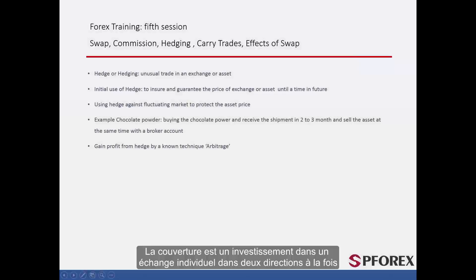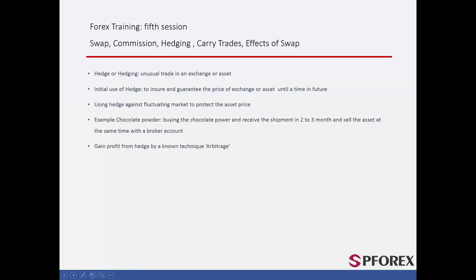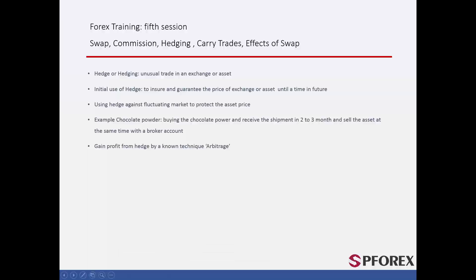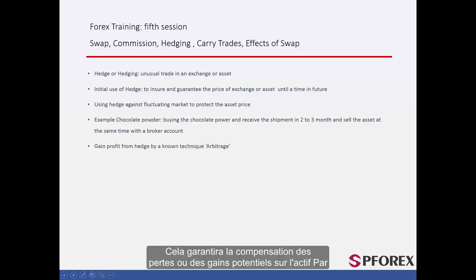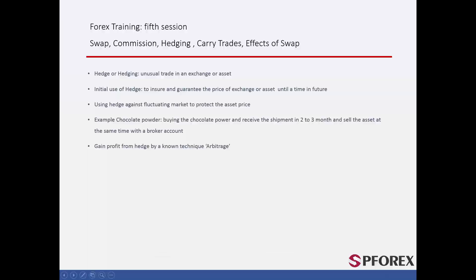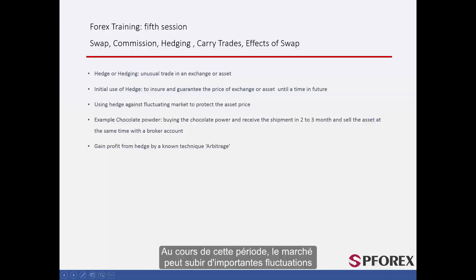Hedging is an investment in an individual exchange in two ways at once. In simple terms, it means to sell and buy a certain asset at the same time. The purpose of hedging is to guarantee the price of an asset until a specific time in the future, ensuring the offset of potential losses or gains. For instance, imagine a businessman purchasing chocolate powder from some country and it takes two or three months for the merchandise to be delivered. During this period, he may experience dramatic market fluctuation — positive or negative.